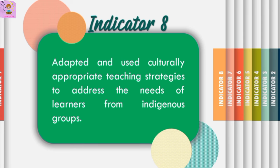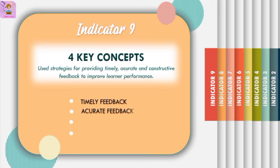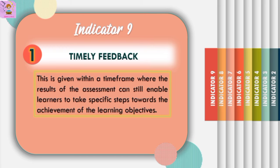Indicator 9 is using strategies for providing timely, accurate, and constructive feedback to improve learner performance. Timely feedback is given within a timeframe where assessment results can still enable learners to take specific steps toward their learning goals — for example, quickly grading a test and discussing results with the class so learners can see where they need to improve. Accurate feedback refers to providing a clear assessment of learners' level of attainment of a given competency or skill — for example, providing detailed feedback on essay organization, coherence of arguments, and use of evidence, not just marking spelling and grammar errors.